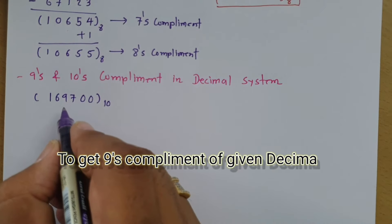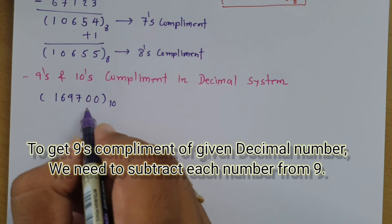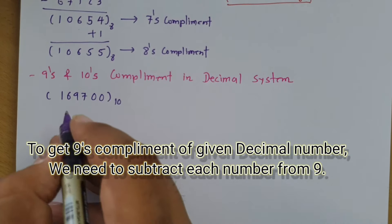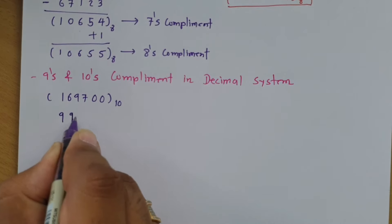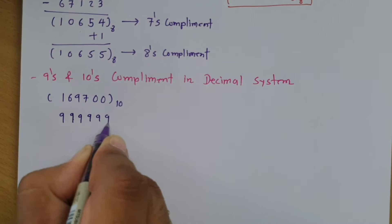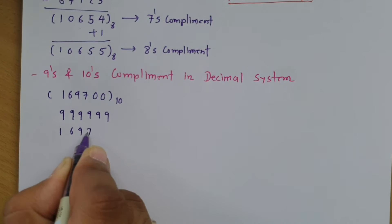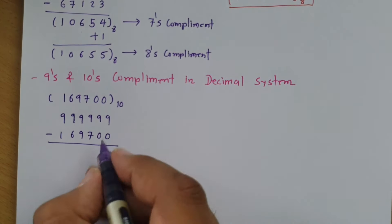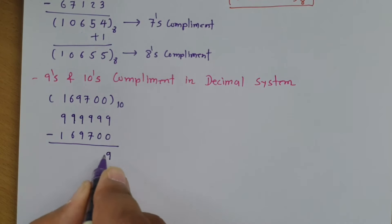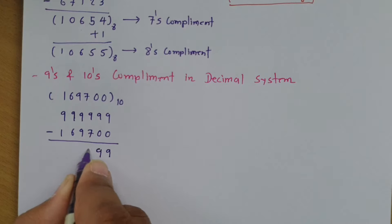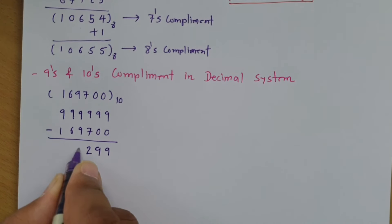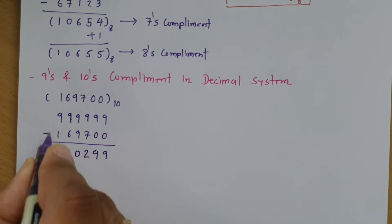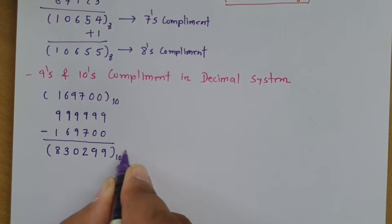To find 9's complement, subtract each digit of the given decimal number from 9. Our number has 6 digits, so we subtract each from 9: 9 minus 0 is 9, 9 minus 0 is 9, 9 minus 7 is 2, 9 minus 9 is 0, 9 minus 6 is 3, and 9 minus 1 is 8. So this is the 9's complement.